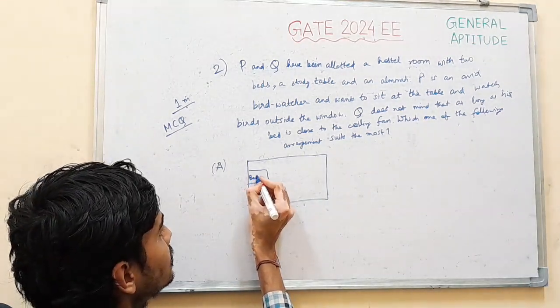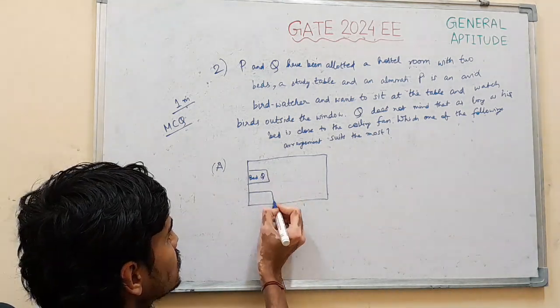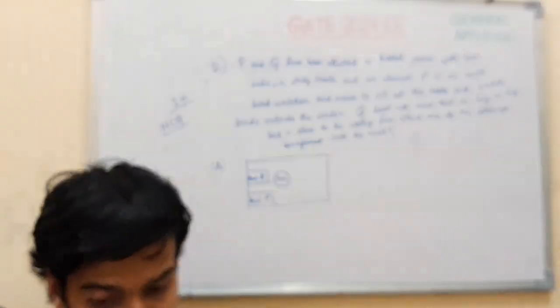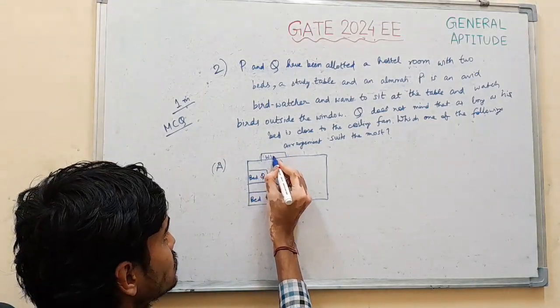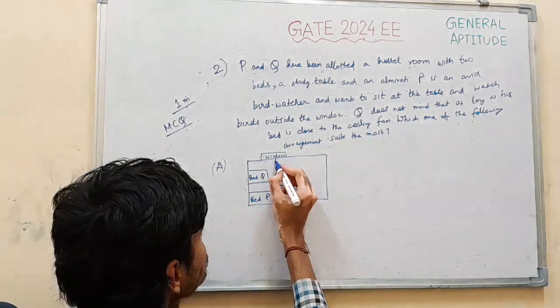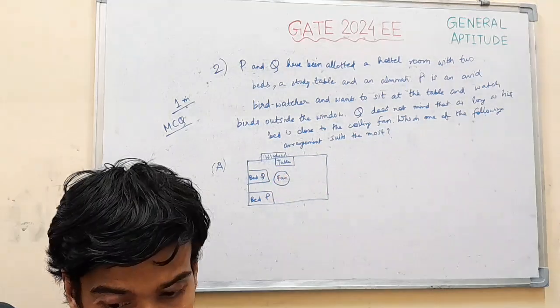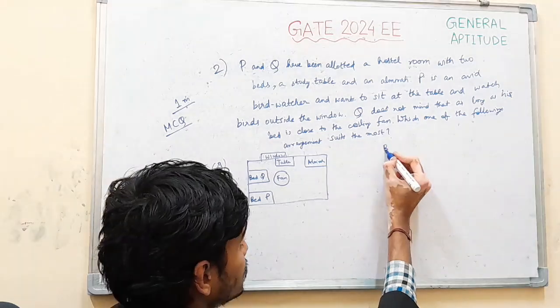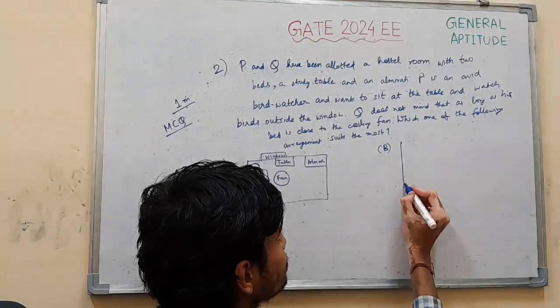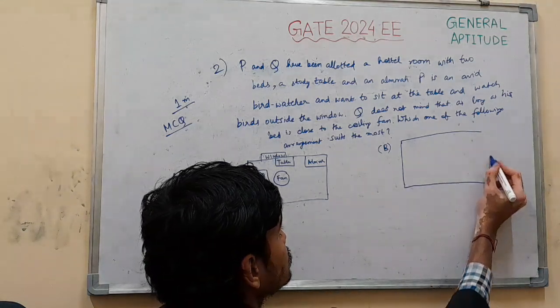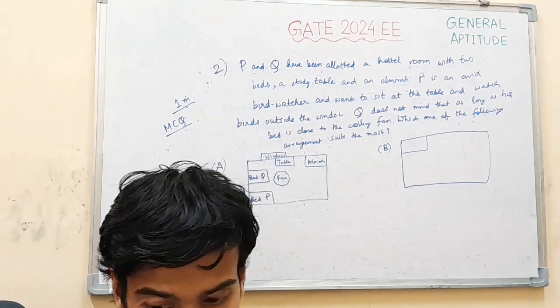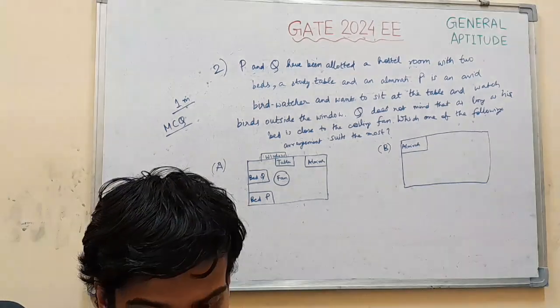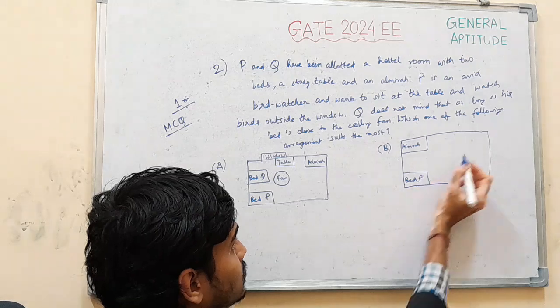We have bed Q, bed P, this is the fan and this is the window, table. This is first option A, next B. This is bed P, bed of P, this is bed Q.